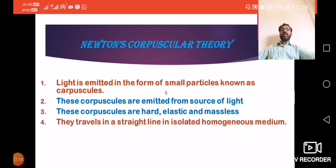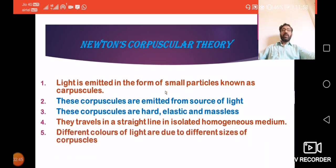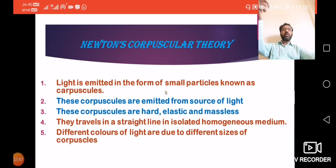These particles travel in a straight line in an isolated homogeneous medium. Ek medium mein, particles ek straight line mein travel karte. Now, why are there different colors? These particles are not of the same size, and due to different sizes of corpuscles, there are different colors of light.